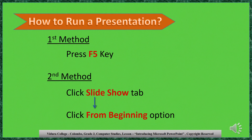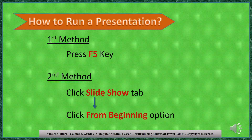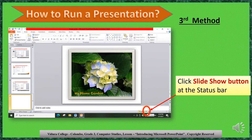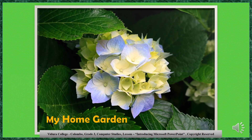Now we are going to run the presentation. There are three methods. First method: press the F5 key from the function keys. Second method: click the Slide Show tab and click From Beginning option. Third method: click the Slide Show button at the status bar. This is how you can see your slide in the show.